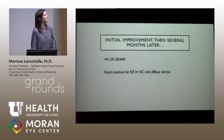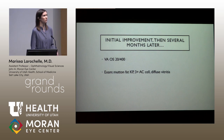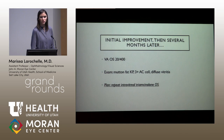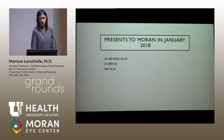They thought it improved initially — she went from 20/400 to 20/200 for a few weeks — but then a couple months later she came back with worsening vision again, now had mutton fat KP and diffuse vitritis, and so they re-injected triamcinolone alone into the eye. She came to us several months after that.